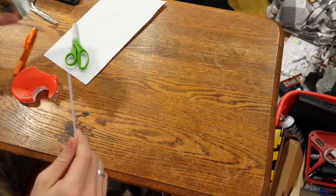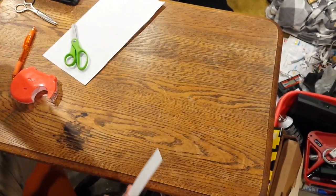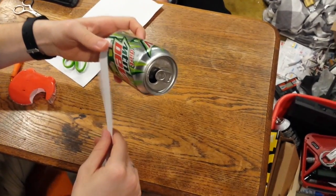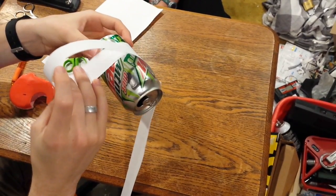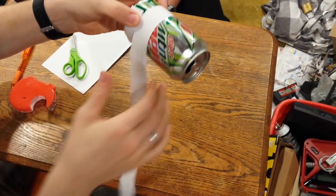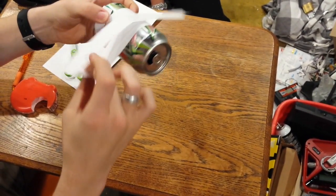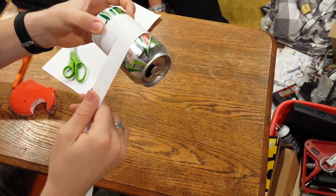So now what we're going to do, we're going to take our can of soda, finish it off. Alright, we're going to wrap our paper around it. See that, boom. And this paper's probably a little bit wide, but oh well.